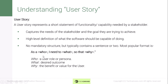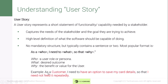Let's take an example to understand this better. As a customer, I need to have an option to save my card details so that I need not feed it repeatedly. The customer is the user role here. He expects to have an option to save his card details — that is his desired outcome. And the benefit he achieves is that he need not feed the information again.